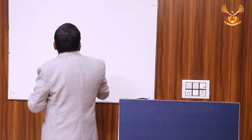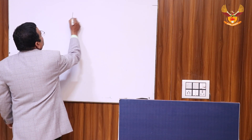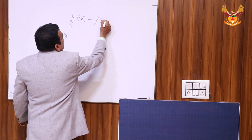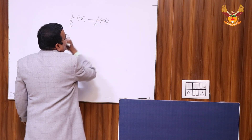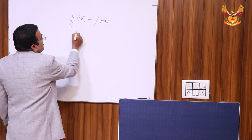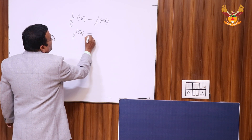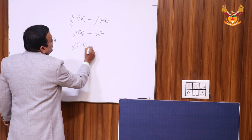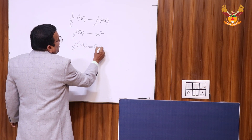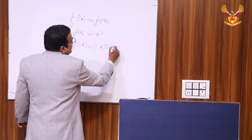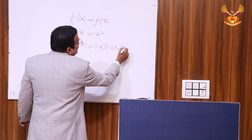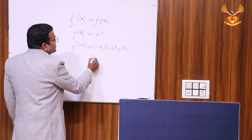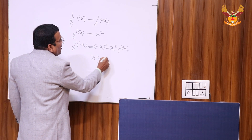What is the even function? If any function f(x) satisfies f(x) = f(-x), it is called the even function. For example, f(x) = x², then f(-x) = (-x)² = x², which equals f(x). So this is an even function. Another example: f(x) = x⁴, cos x, etc. are called even functions.